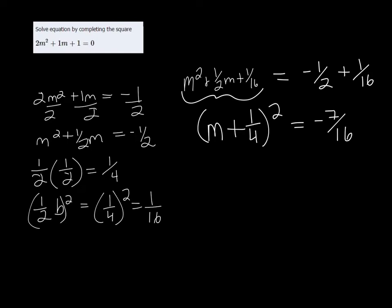Alright, so this is number 11.7. Okay, alright, so now we can take the square root of both sides.